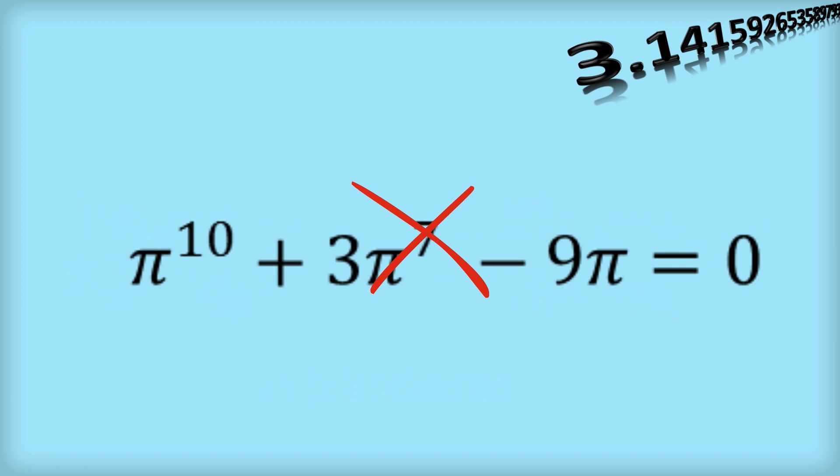Also, pi can't be expressed as the root of any polynomial, or if you like, it can't satisfy a polynomial equation like this. So we say that pi is transcendental.